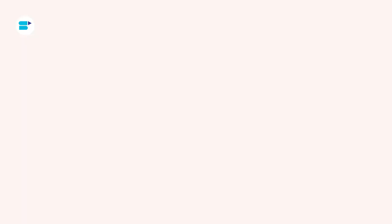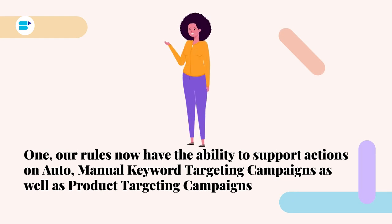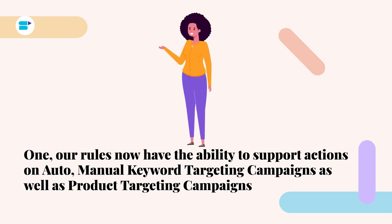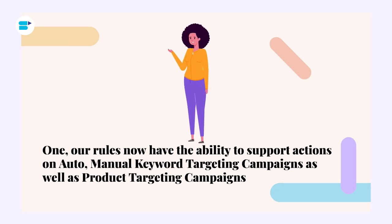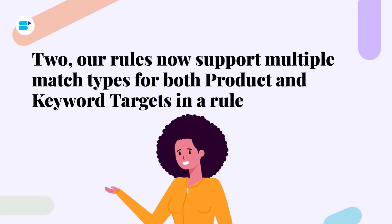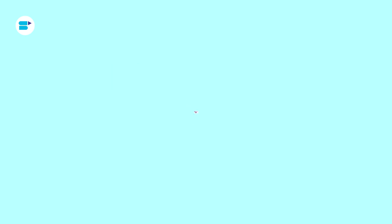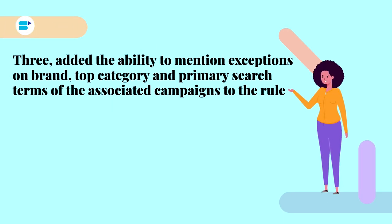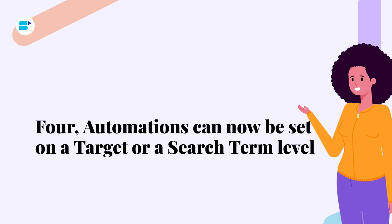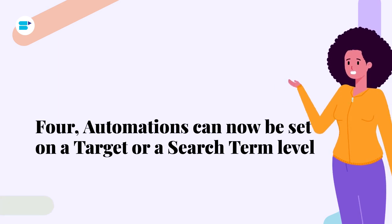Additionally, we have multiple updates on the existing SellerApp automation features. First, our rules now have the ability to support actions on auto-manual keyword targeting campaigns as well as product targeting campaigns. Second, our rules now support multiple match types for both product and keyword targets in a rule. Third, we have added the ability to add exceptions on brand, top category, and primary search terms of the associated campaigns. Fourth, automation can now be set on a target or a search term level.